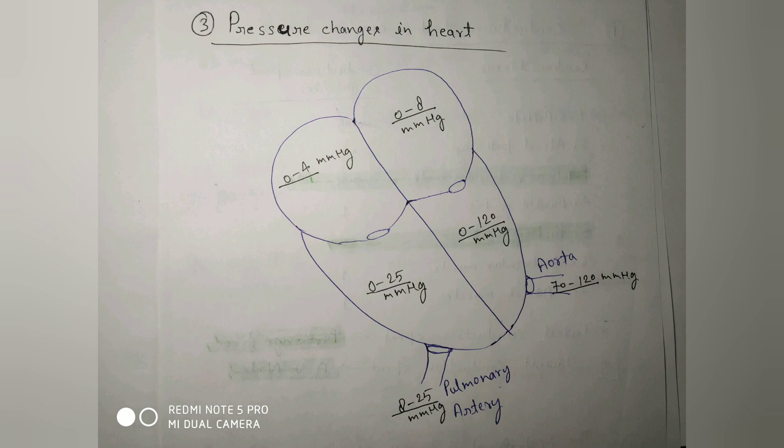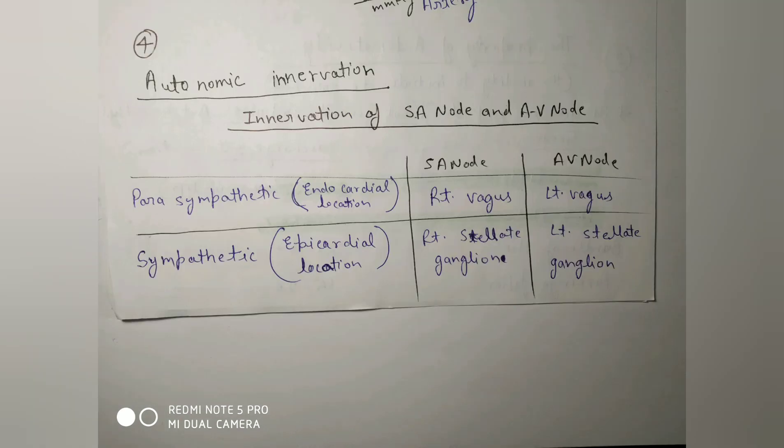The next topic is pressure changes in the heart. The left ventricle has 0 to 120 mmHg, the right ventricle is 0 to 25 mmHg, the right atrium is 0 to 8 mmHg, and the left atrium is 0 to 4 mmHg. You can also see the pulmonary artery and aorta pressures.